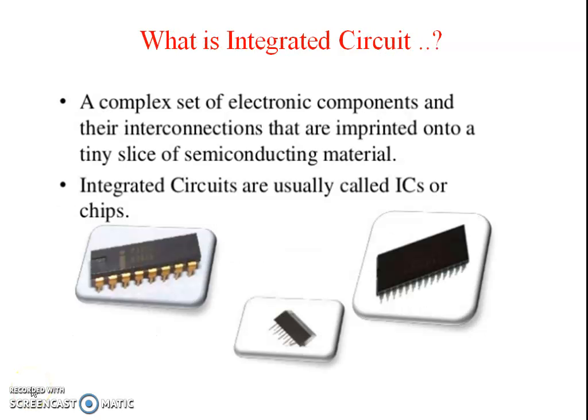Now what is an integrated circuit? An integrated circuit is a complex set of electronic components and their interconnections that are imprinted onto a tiny slice of semiconducting material. It means that an integrated circuit is a small silicon semiconductor crystal called a chip. It contains components like transistors, decoders, resistors, and capacitors.